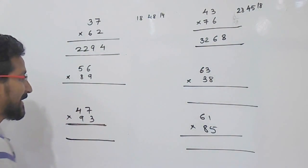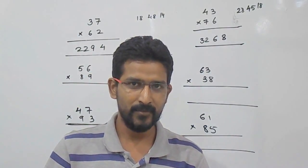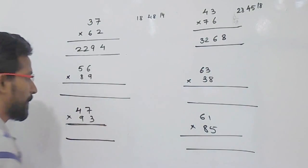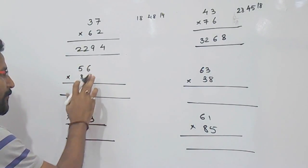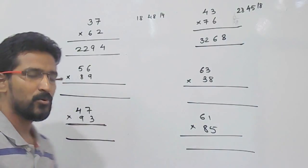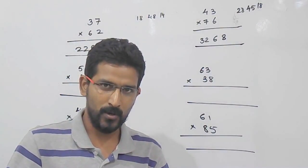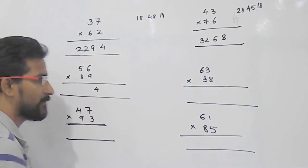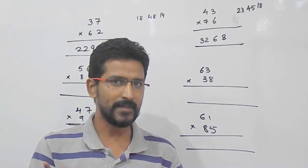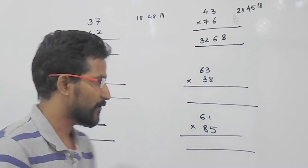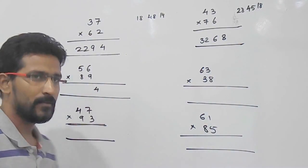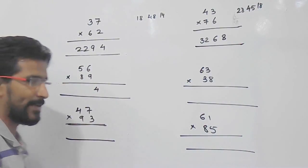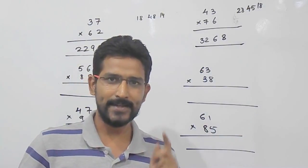Now we will see the next example but we will not write anything. We will calculate mentally and write the answer directly. For example, again follow the same step: 6 into 9 that is 54. Just write the unit place value, so it will be 4. 5 will be carried forwarded, keep in mind 5 is carried forwarded. Now, 5 into 9 is 45, 6 into 8 is 48. 45 plus 48 that is 93.